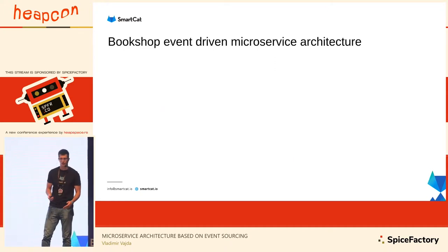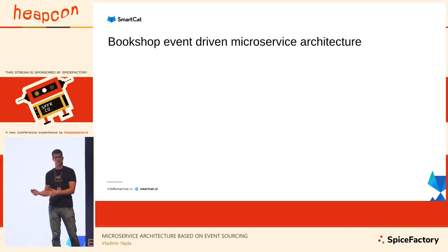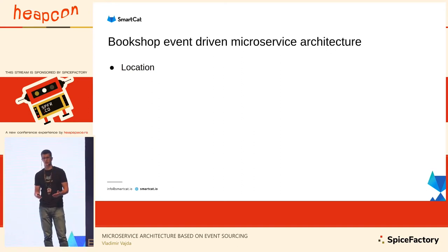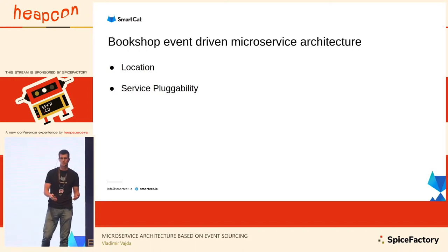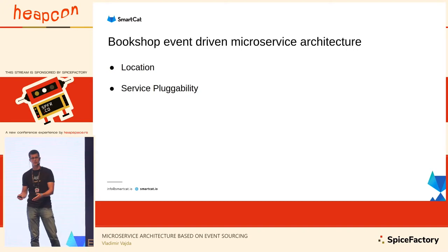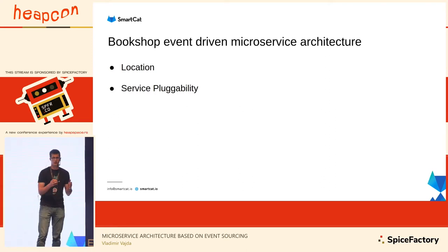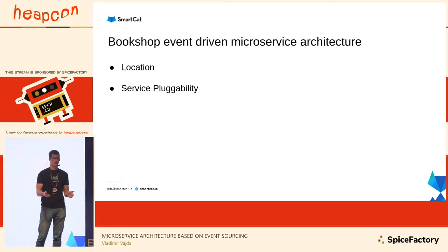The event bus can be any messaging technology — RabbitMQ, Kafka, ActiveMQ, and others. Let's revisit the five points from the request-driven architecture. First, location: your UI backend service does not need to know the location of the account service or the shipping service — it sends information to the event bus and that's all. Second, service pluggability: if you want to introduce an additional service, you just plug it into the event bus, have it listen to particular events, and the service will do the job without changing any existing code.